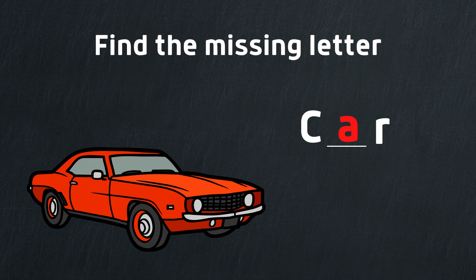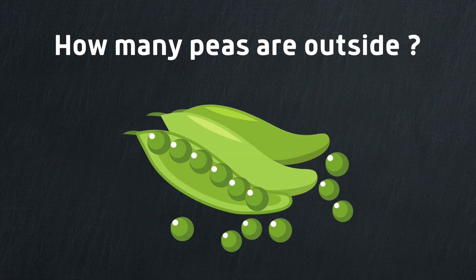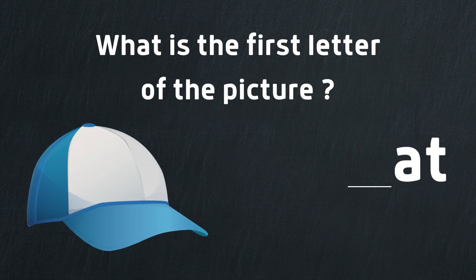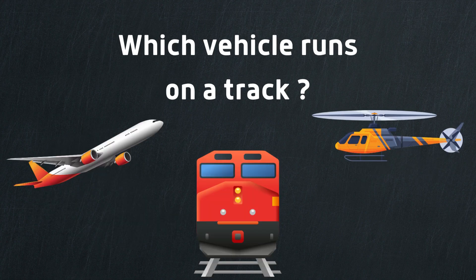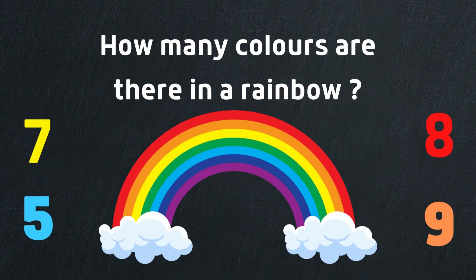The missing letter is A. It's a car. How many pears are outside? Number seven. What is the first letter of the picture? H. Which vehicle runs on a track? Yes, it is a train. How many colors are there in a rainbow?